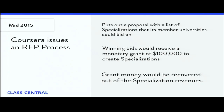These numbers showed that packaging into specializations was working. Coursera wanted more of them, so they decided to take control of the process. They made a list of specializations they thought would monetize well, then asked their member universities to bid on them. The winning universities would get a $100,000 grant to create these specializations, and the grant money would be recovered from specialization revenues.